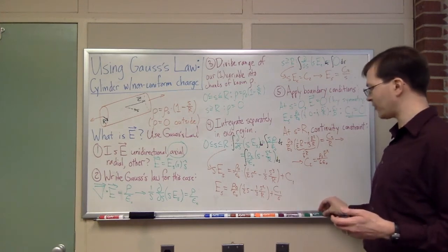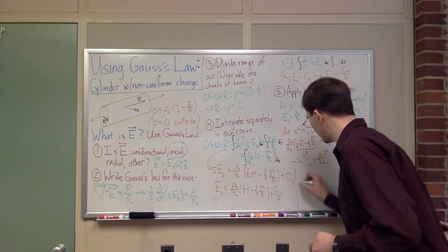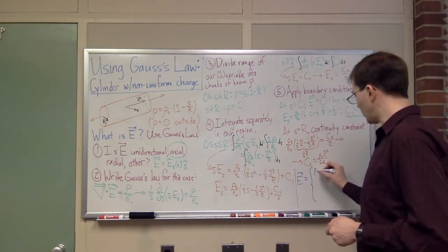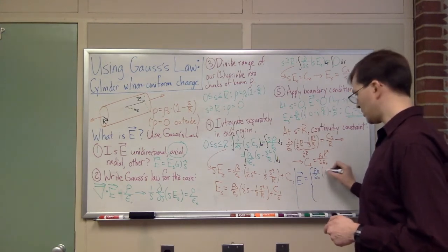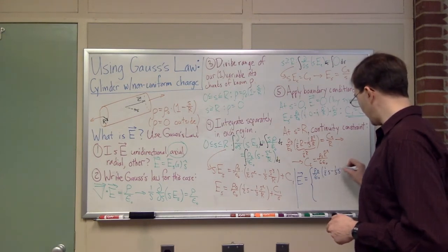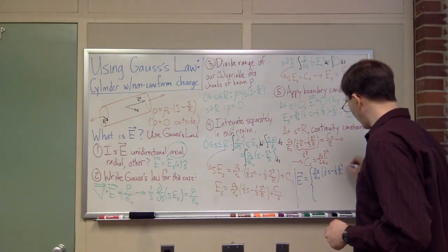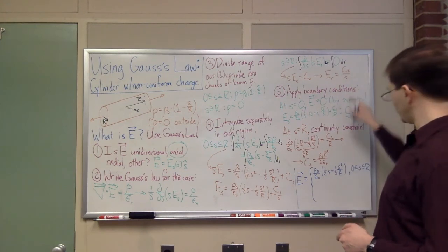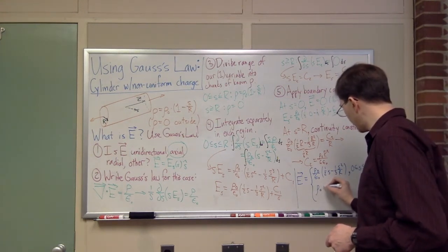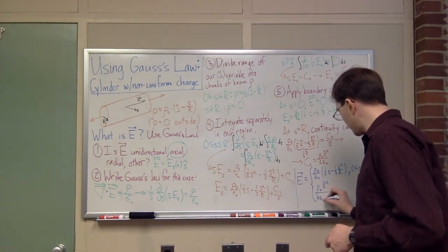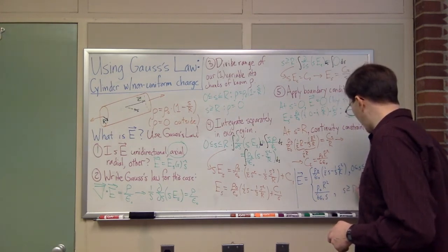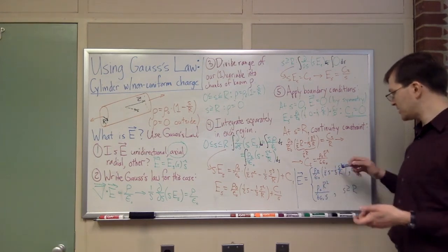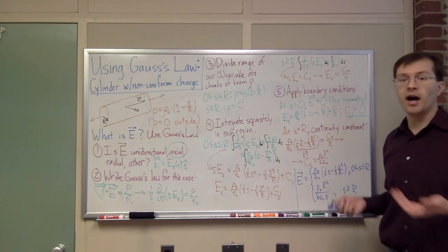At this point I have my result — the field everywhere. The electric field equals rho-naught over epsilon-naught times (one-half s minus one-third s² over r) for 0 ≤ s ≤ r, and equals rho-naught r² over (6 epsilon-naught · s) for s ≥ r. You can check that it matches at s equals r and is zero at s equals zero, as required by our boundary conditions.